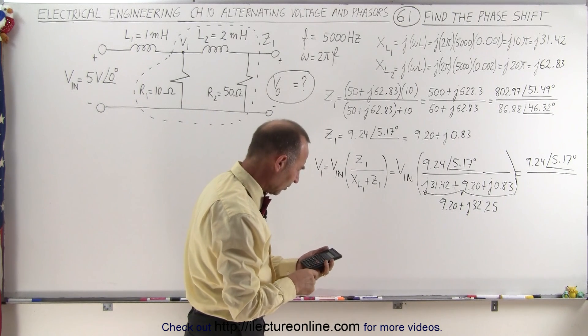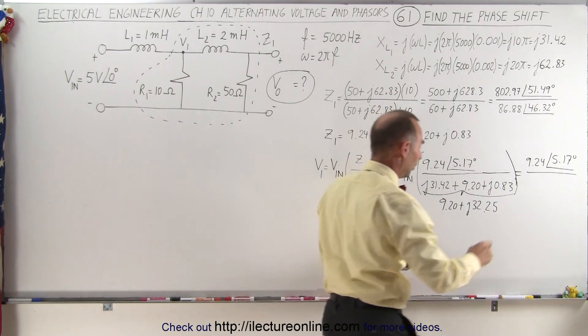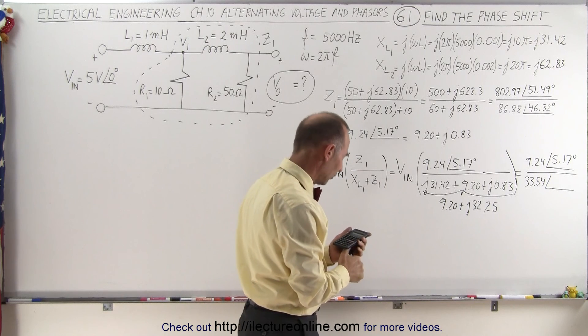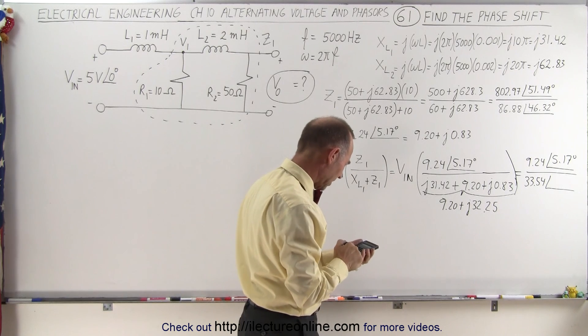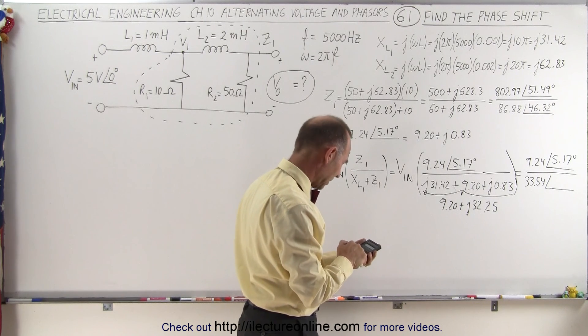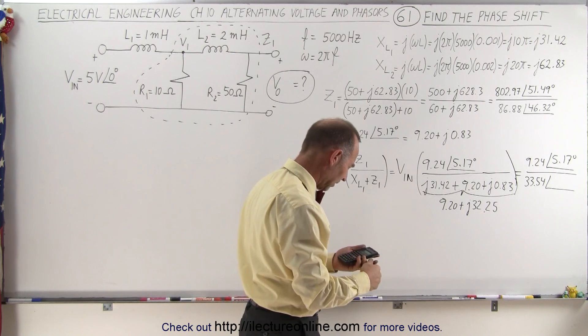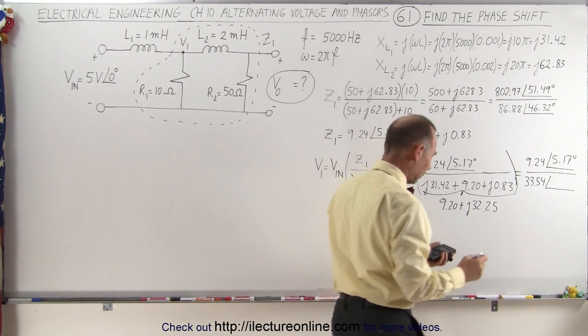With an angle of, we have 32.25 divided by 9.2, take the inverse tangent of that, 74.08 degrees.